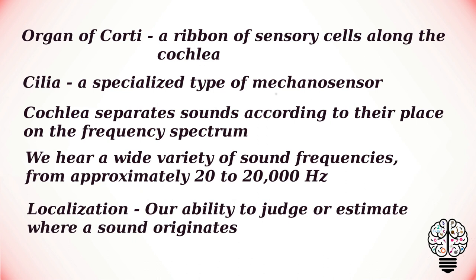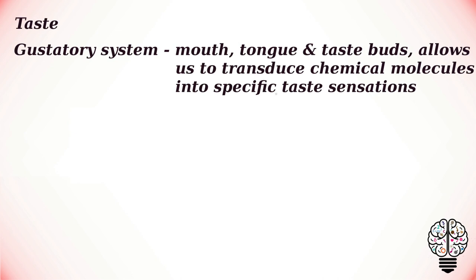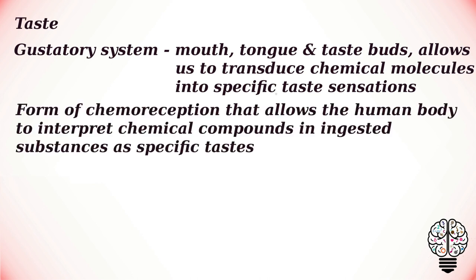Our ability to judge or estimate where a sound originates is called localization. The next sense that we are going to talk about is taste. The gustatory system, including the mouth, tongue and taste buds, allows us to transduce chemical molecules into specific taste sensations. The gustatory system uses a form of chemoreception that allows the human body to interpret chemical compounds in ingested substances as specific tastes.